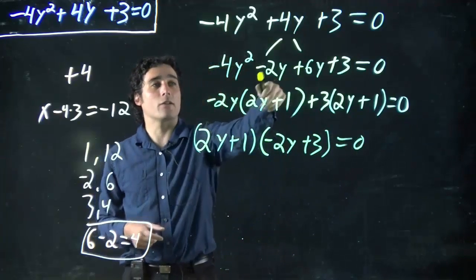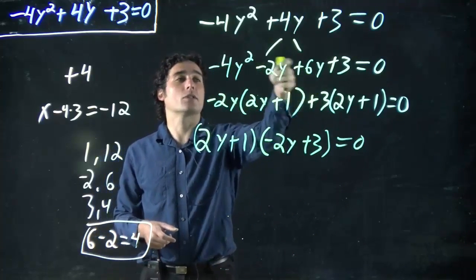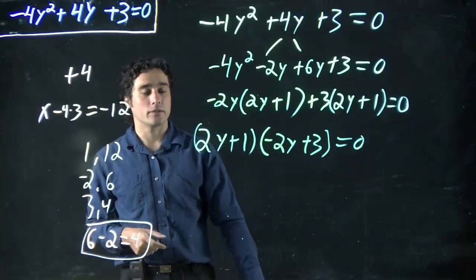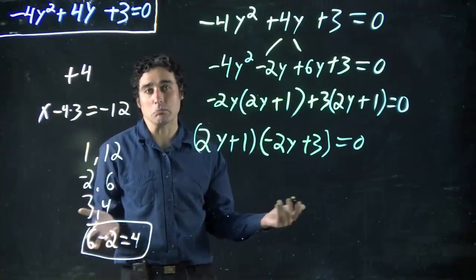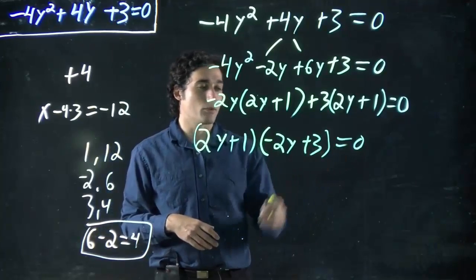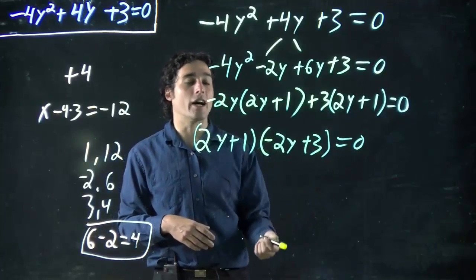Remember, it didn't matter what order I went. If I'd gone the other order and put the 6y in front, this would have been the term in brackets that I would have factored out and had this left over. I recommend trying just to see. Maybe I'm lying. Good thing to check. But we're still not done. We still have to solve for y as well.